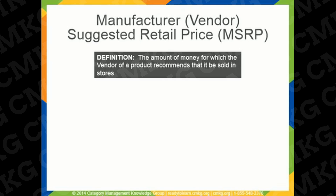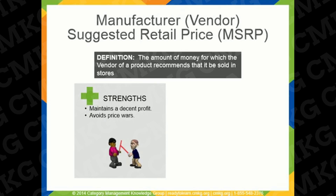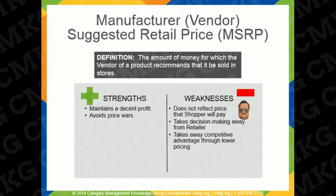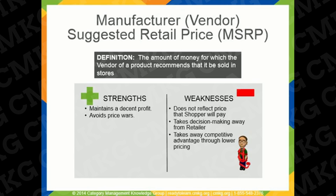Vendor-suggested retail price is another retail pricing strategy. It's the amount of money for which the vendor of a product recommends that it be sold for in stores. It's a common strategy used by smaller retail stores to maintain a decent profit while avoiding price wars. However, there are some potential issues when retailers rely on MSRPs. It does not necessarily correspond to the price that competitive retailers actually use, or even more importantly, the price shoppers are willing to pay. By pricing products with vendor-suggested retail prices, the retailer loses decision-making influence over pricing and misses competitive advantages of pricing lower or higher.